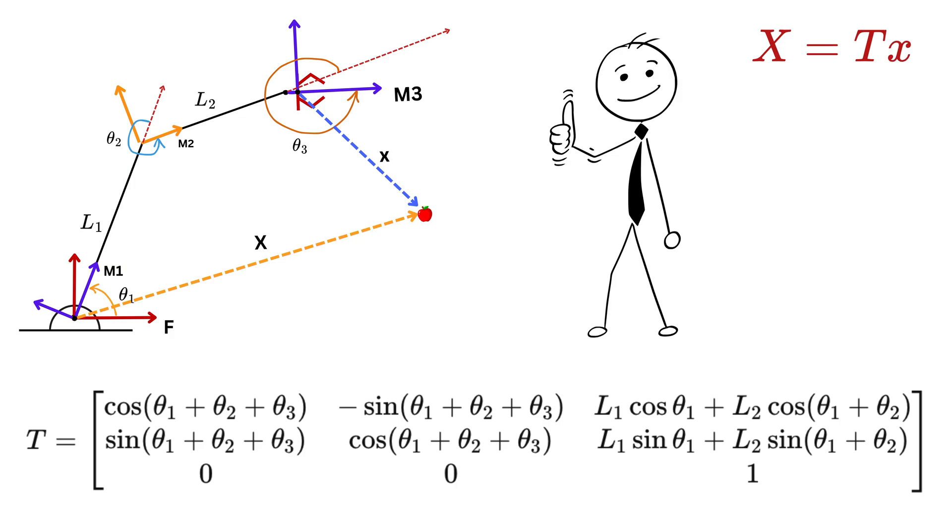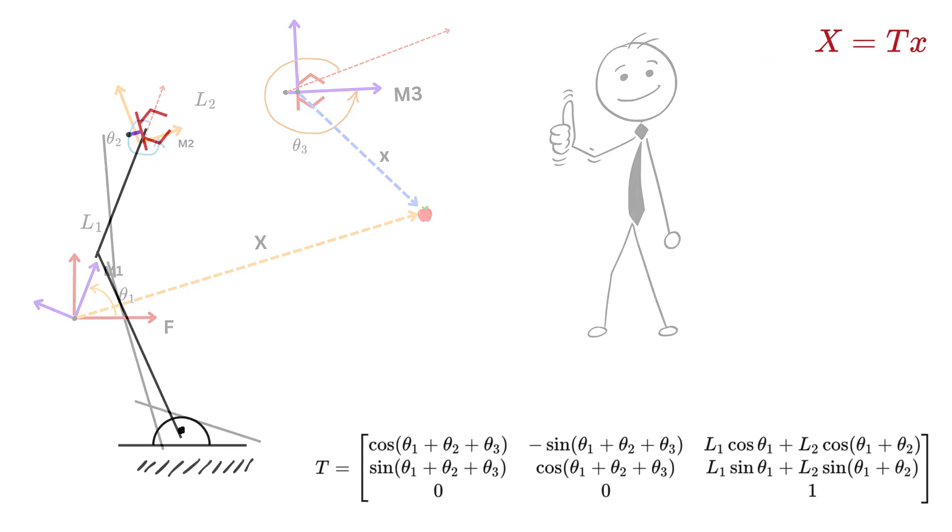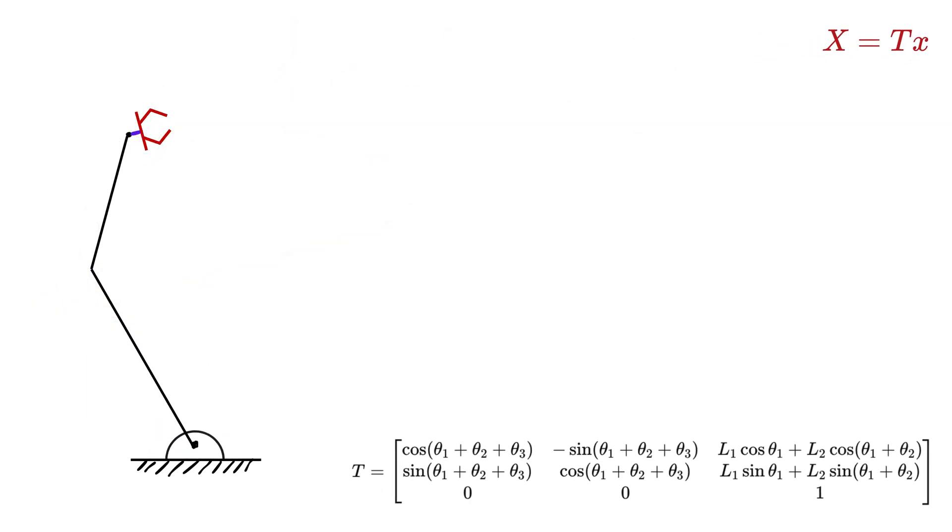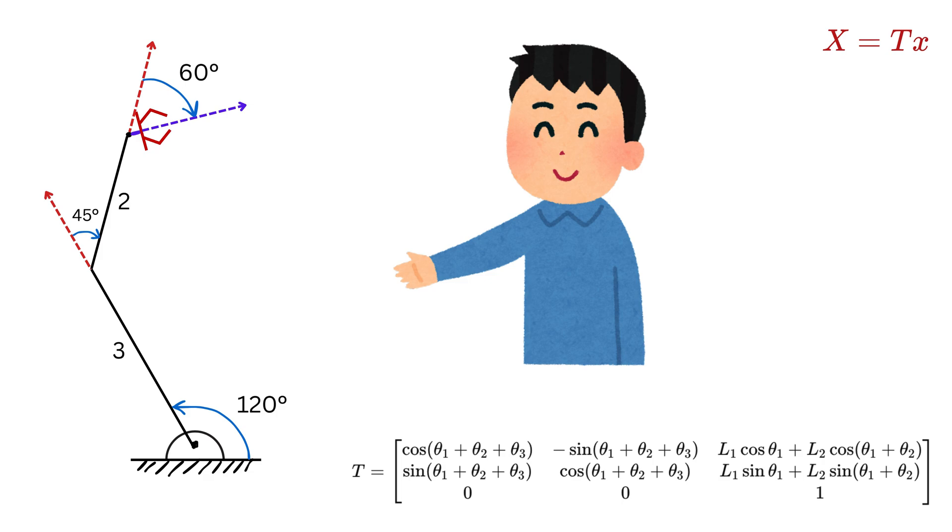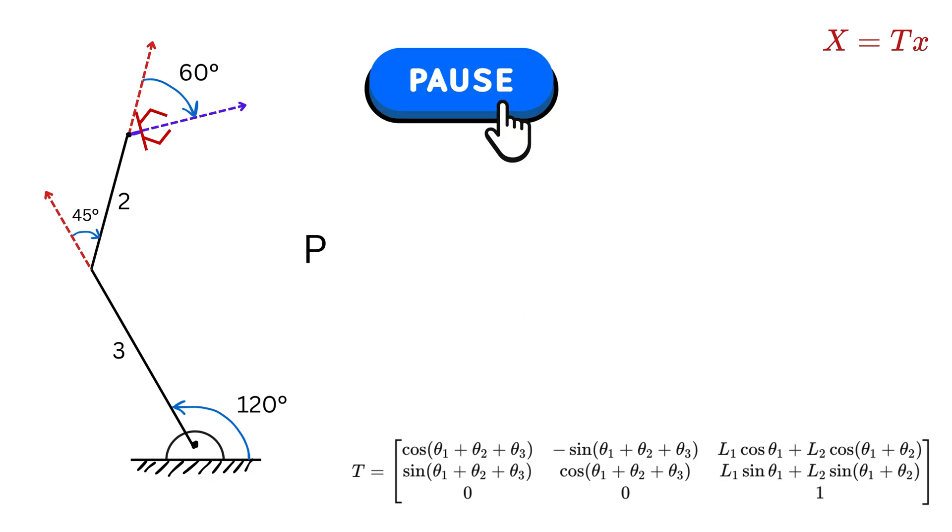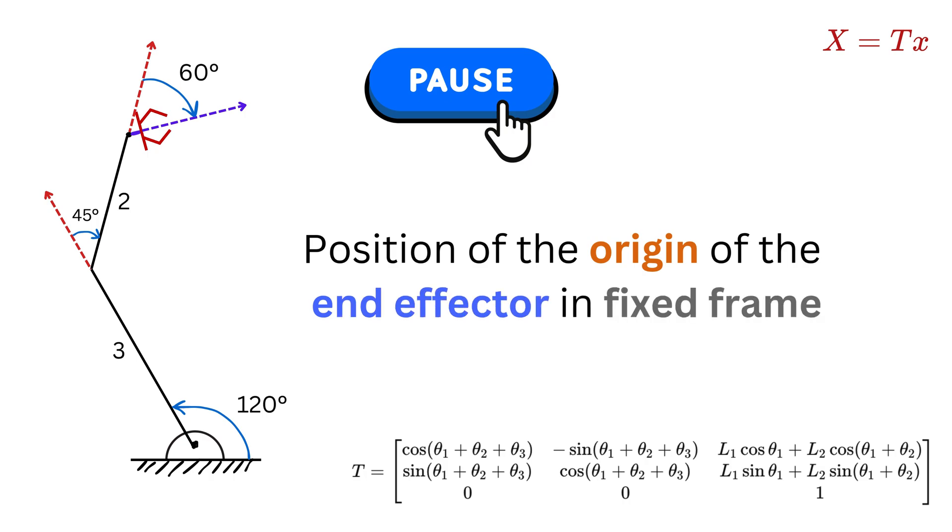Let us solve an example. Assume we have this two-link robot in this orientation. Length of this link is 3 units and the length of this link is 2 units. This angle is 120 degrees. Then this angle is 45 degrees and this angle is 60 degrees. Using only this information, let me know the position of the origin of the end effector in fixed frame F.